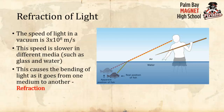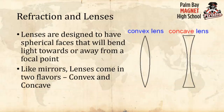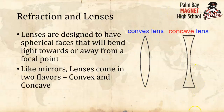This brings us to lenses. Lenses come in two flavors, just like mirrors: convex lenses, which curve outward, and concave lenses. They are called spherical lenses because they work the same way as spherical mirrors — they have a focal point and a center of curvature.